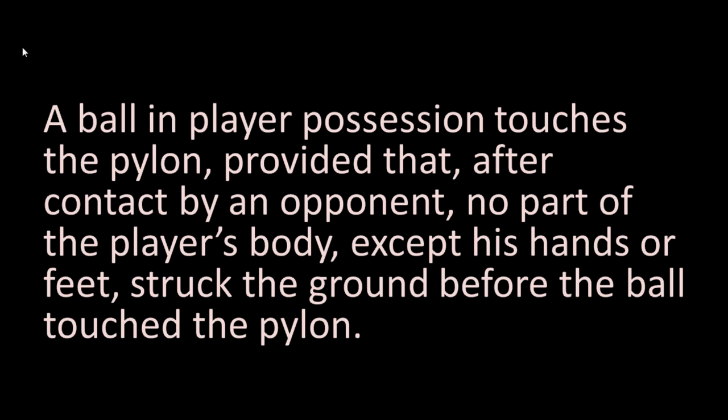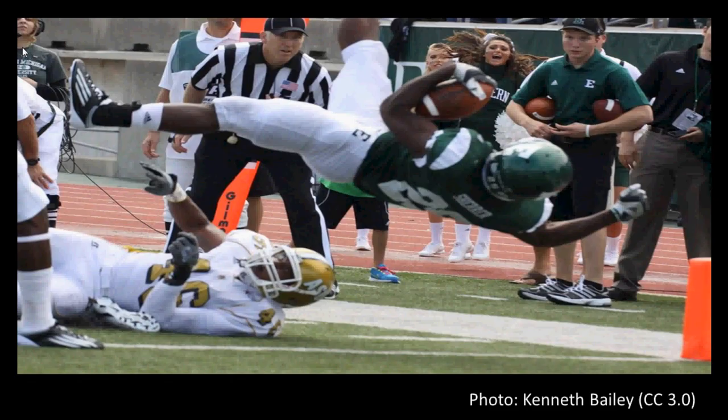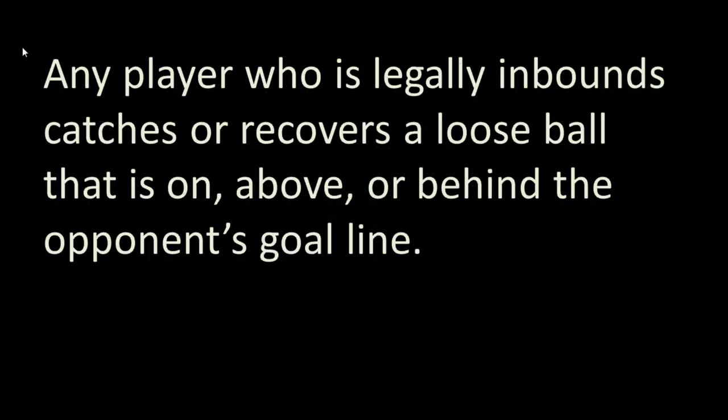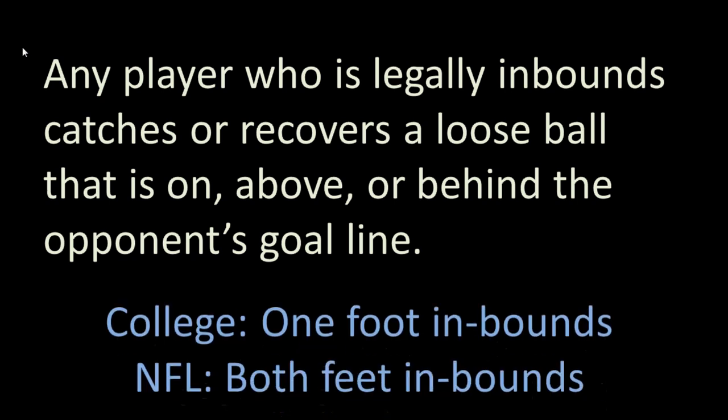The next rule is that it is a touchdown if any player who is legally in bounds catches or recovers a loose ball that is on, above, or behind the opponent's goal line. This mostly covers receiving touchdowns. When a pass is caught along the sideline or in the back of the end zone, a player must get his feet down in bounds after catching the ball. For college games, the player must have one foot down in bounds, but in the NFL, the player must have both feet down in bounds. The receiver must also be cautious not to go out of bounds and then come back in, as that would be a penalty and take the touchdown away.